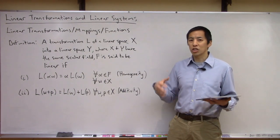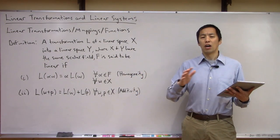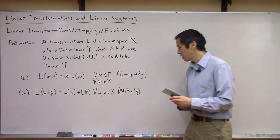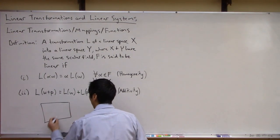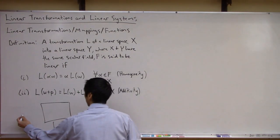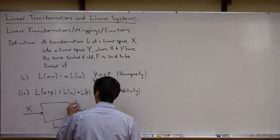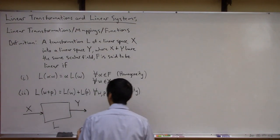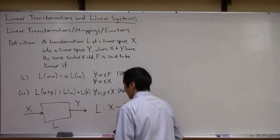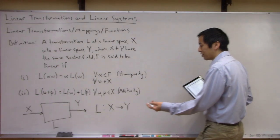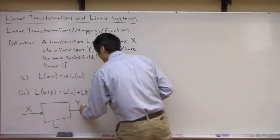This is the formal definition, and if you're not comfortable with the idea of linear spaces or fields, don't worry too much. The concept is actually quite simple. You can visualize this: L is basically a function or a mapping which takes in something from input space X and maps it to output space Y. Sometimes you'll see this written as 'L maps from X to Y.' It's just a black box — some operation or transformation. You stick something in, you get something out.